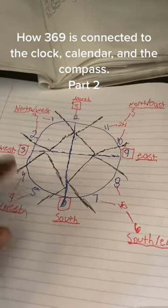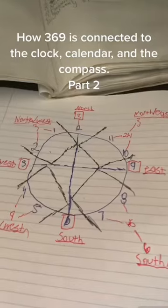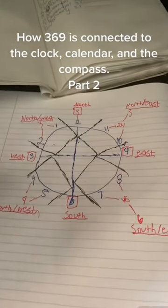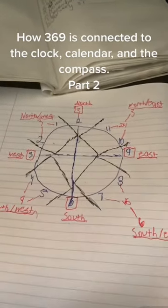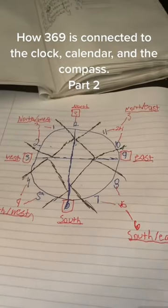6, 6, 9, 3, 3. You see it. It's also connected to the compass, and the compass is also 360 degrees, which simplifies to the number 9.